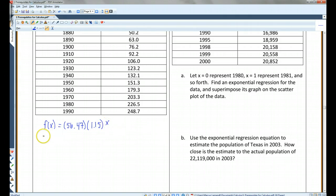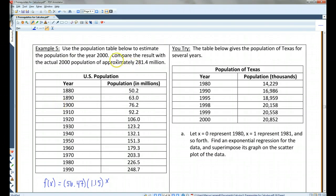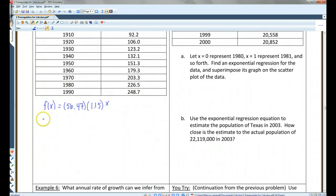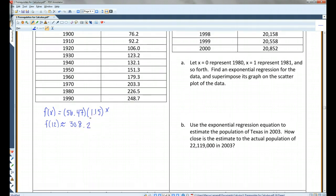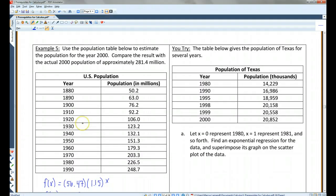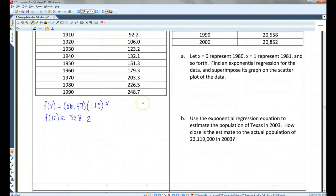Okay, so now all I have to do, we're looking for the year 2000, so I'm going to plug in 12. And I'm pretty confident you guys can all do this on your calculator. The answer is 308.2, which actually turns out to be an overestimation of what it actually was.